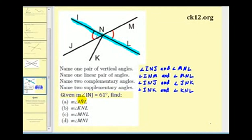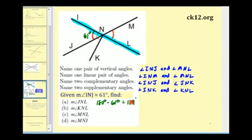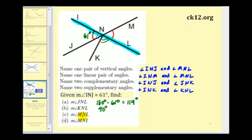Given that angle INJ is 61 degrees, let's find the measure of the following angles. Angle JNL and the given angle form a straight angle, so they're supplementary: angle JNL equals 180 minus 61 degrees, which is 119 degrees. For angle KNL: since angle KNI is 90 degrees and KNI and KNL are supplementary, angle KNL is also 90 degrees. Angle MNL is a vertical angle with the given angle, so angle MNL is 61 degrees.